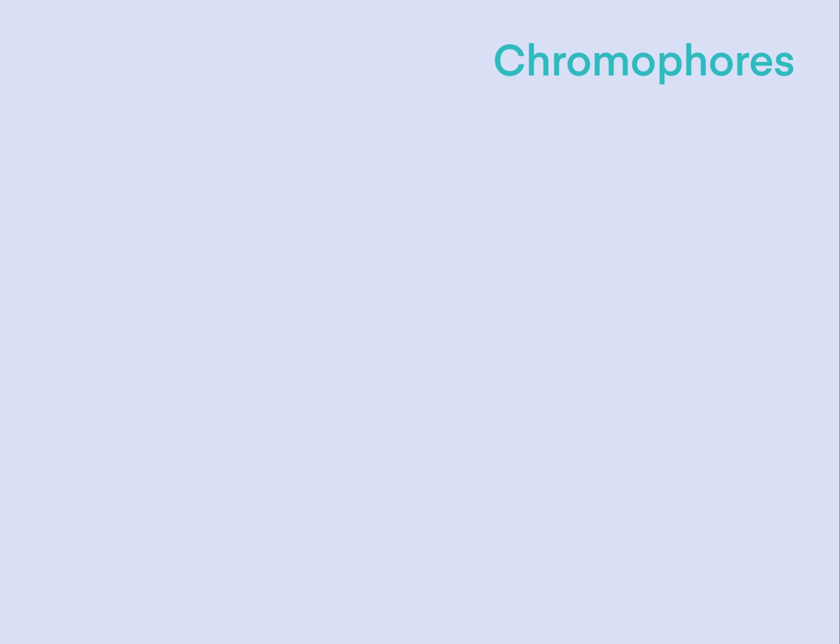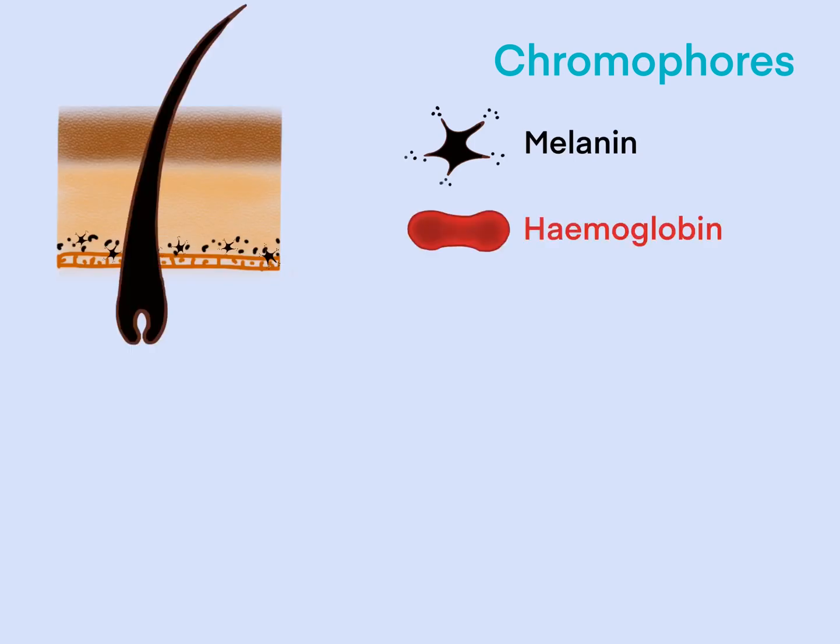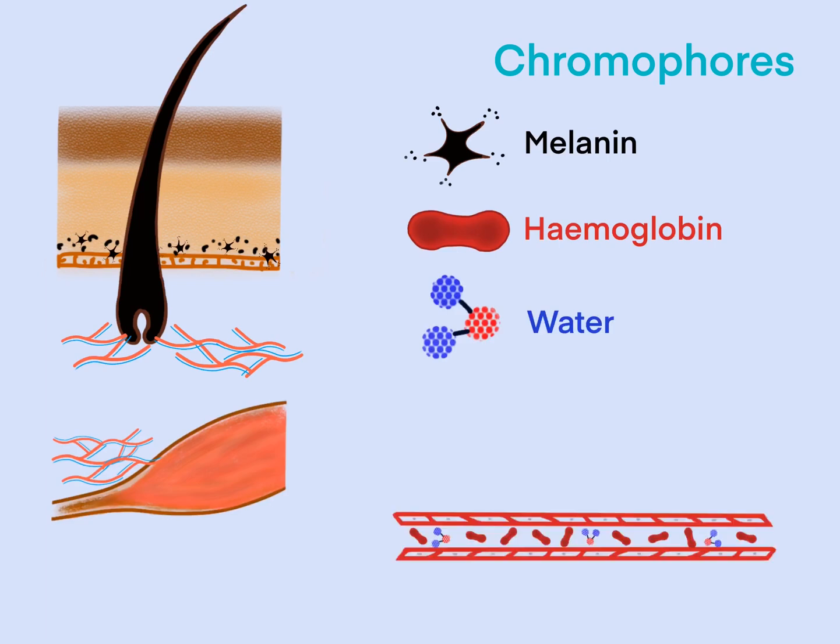There are three chromophores involved in photothermolysis of a surgical laser: the melanin pigment in the skin and hair follicles, the hemoglobin in capillaries and blood vessels, and the water chromophore in blood vessels and every cell in the body.